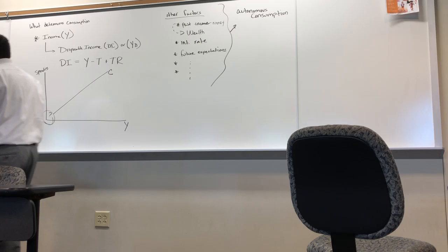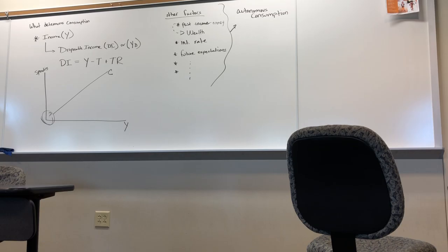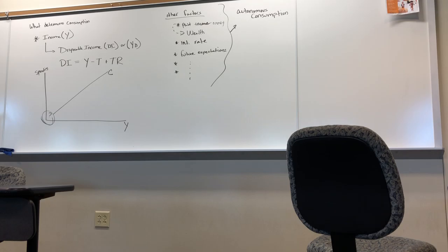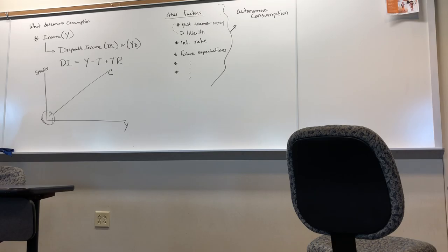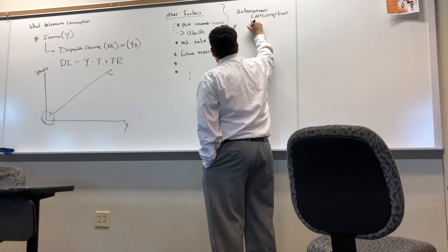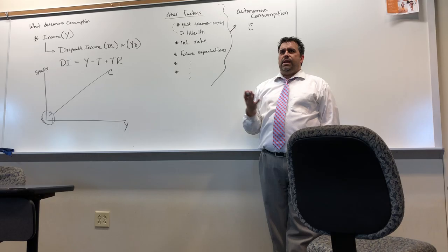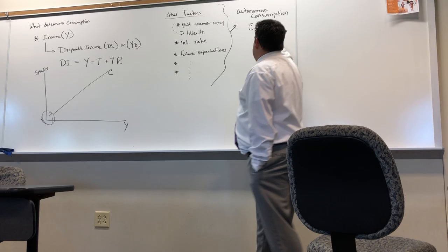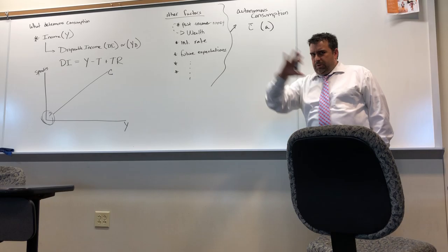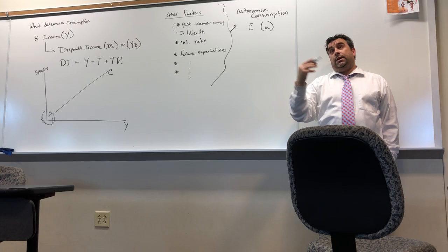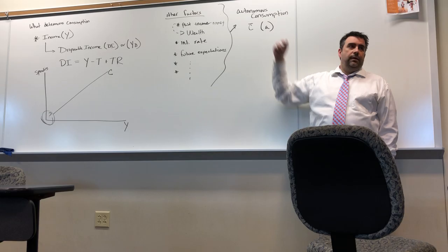Autonomous consumption is any spending that is independent of income — based on one of these other factors. The book uses C-bar; almost every other book uses lowercase 'a' for autonomous consumption. I'm going to go with 'a' because I don't like how our book's equations end up saying C equals C, which is confusing. But if you want to follow along exactly in the book, call it C-bar — that's fine.